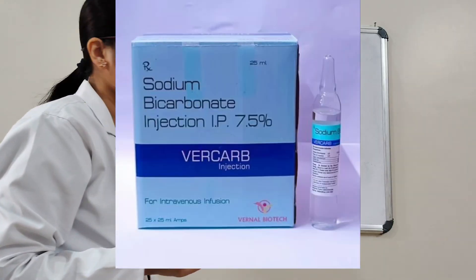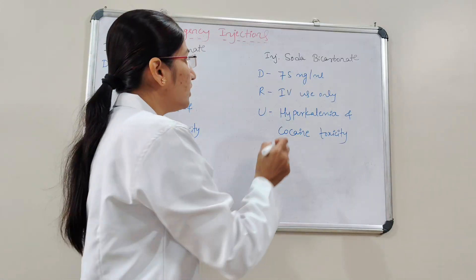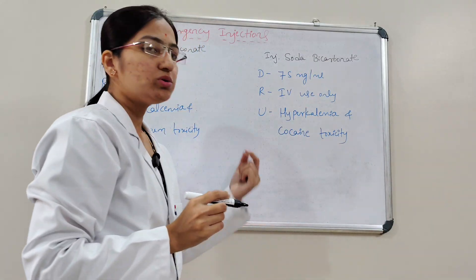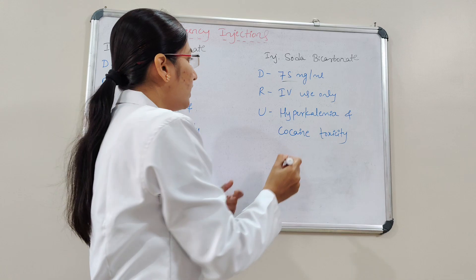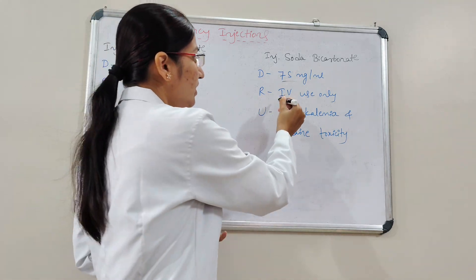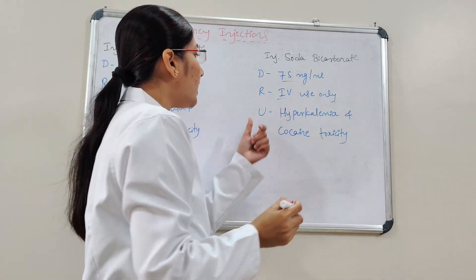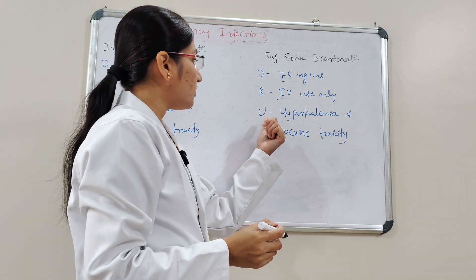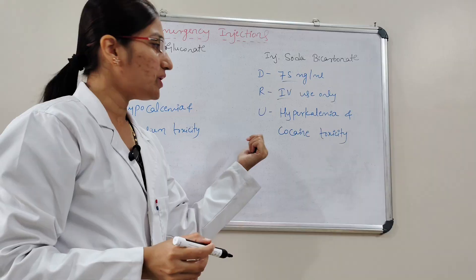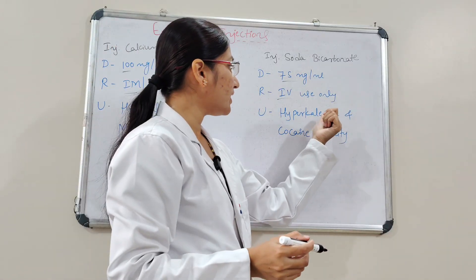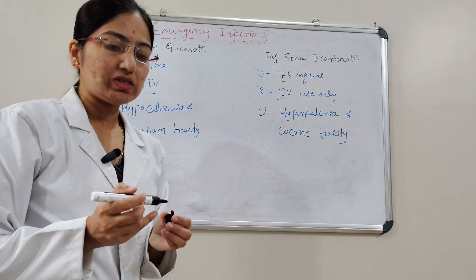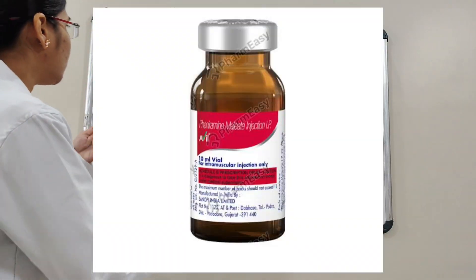The next injection is Sodium Bicarbonate. The dose is 75 mg per ml, route is intravenous infusion only. It is used to treat hyperkalemia and also cocaine toxicity.